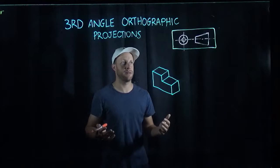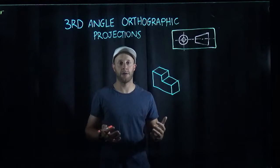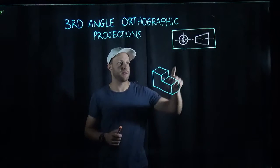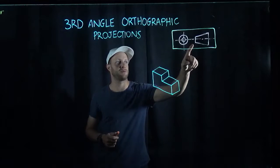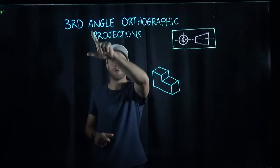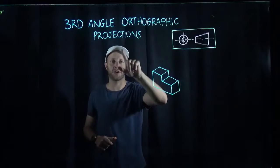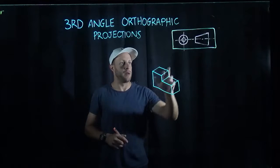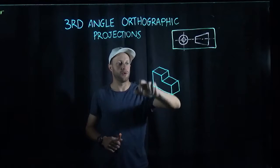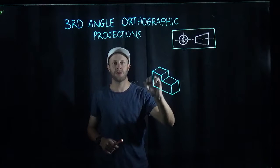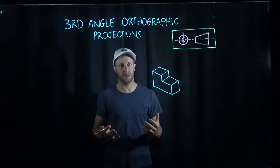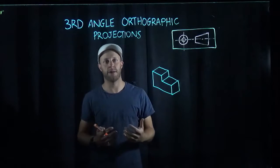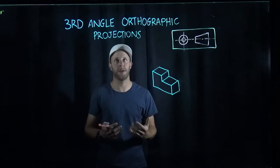Now in Australia, and I believe also the UK and a lot of other countries around Europe, this is the symbol you'll see to represent what we call a third angle orthographic projection. This is a unique way of drawing in two dimensions that we use in Australia, Europe, and the UK.